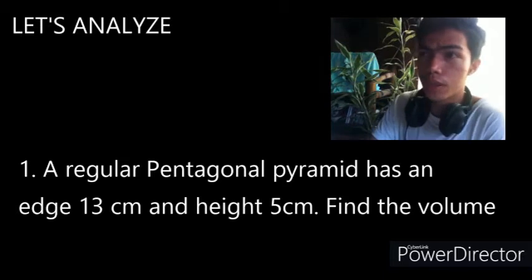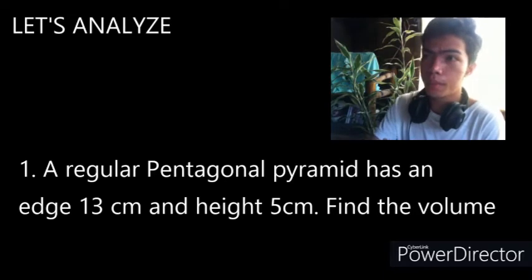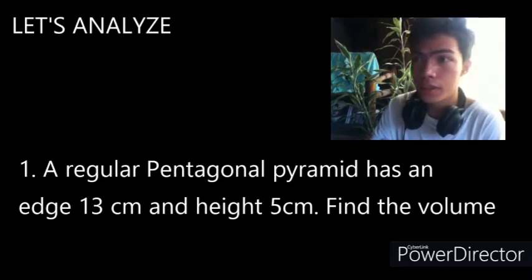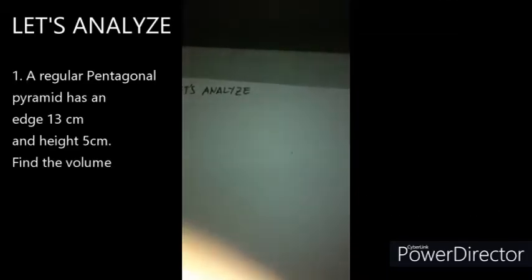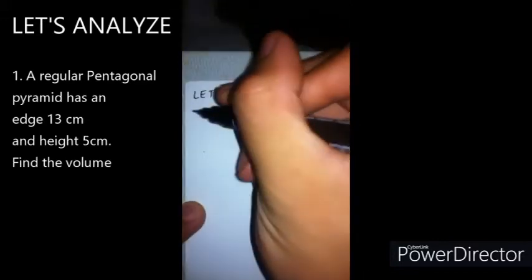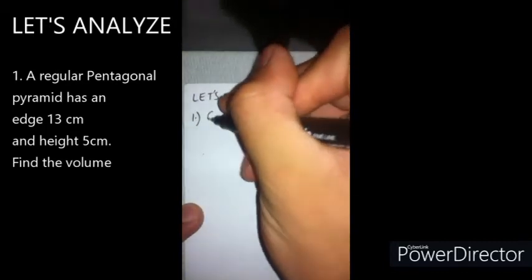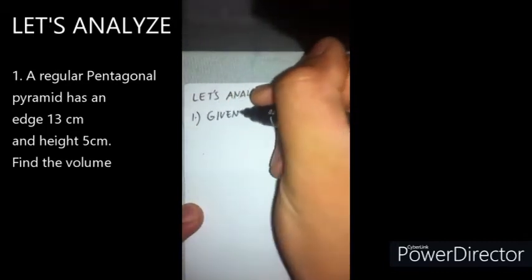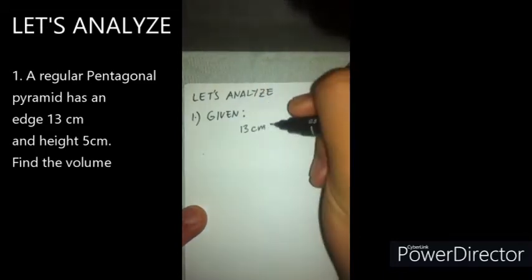So our first problem that we're going to solve: a regular pentagon pyramid has an edge of 13 cm and a height of 5 cm. Find the volume. To answer question number one, the given are 13 cm for the edge.